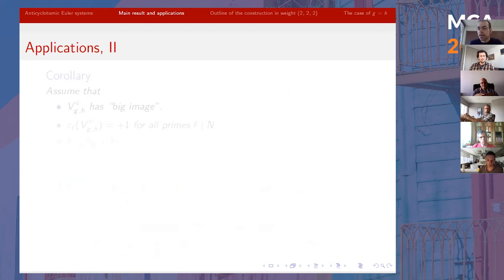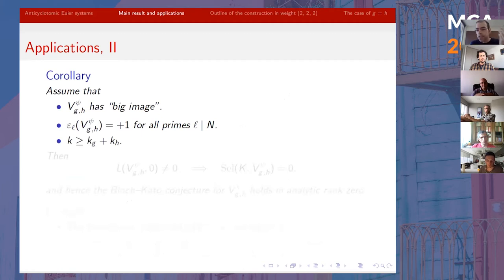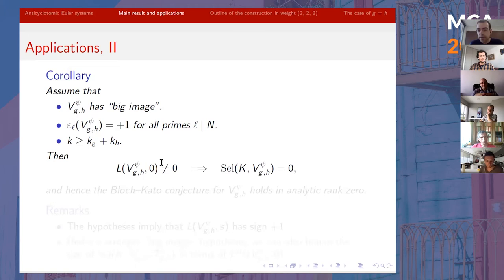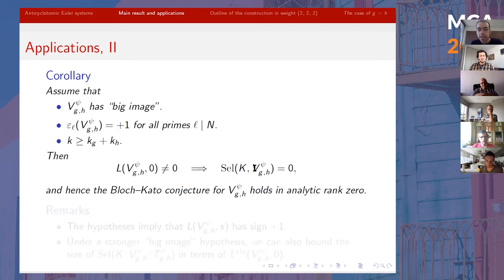The situation is better in analytic rank zero. A second corollary: assuming V has big image, we make the same root number hypothesis but change the sign at infinity. Now K has a dominant weight, forcing the sign in the functional equation to be plus one. We expect systematic non-vanishing for these central values. In that case, we can show that if this central value doesn't vanish, then the Bloch-Kato Selmer group is trivial — giving instances of the Bloch-Kato conjecture for this representation in analytic rank zero.